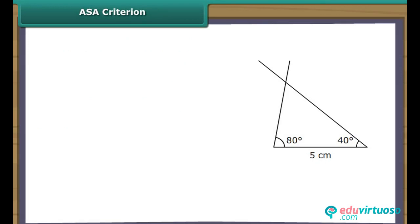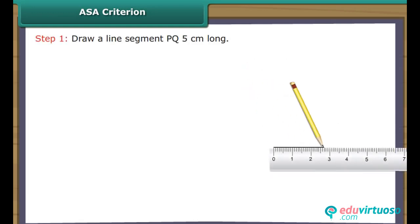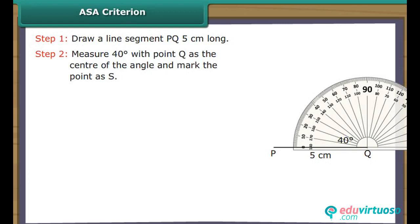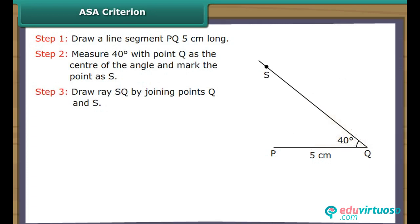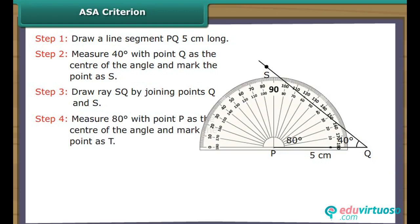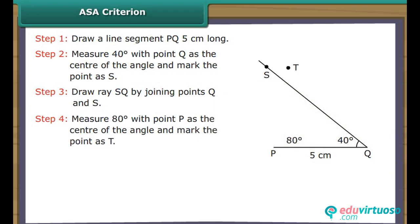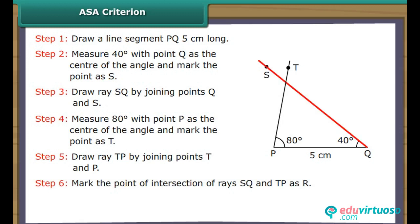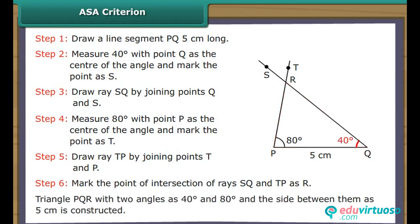ASA Criterion: Let us now draw a triangle, two of whose angles measure 40 degrees and 80 degrees and the side between them measures 5 cm. Draw a line segment PQ 5 cm long. Measure 40 degrees with point Q as center and mark the point as S; draw ray SQ. Measure 80 degrees with point P as center and mark the point as T; draw ray TP. Mark the point of intersection of rays SQ and TP as R. Triangle PQR with two angles of 40 degrees and 80 degrees and the side between them of 5 cm is constructed.